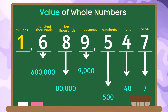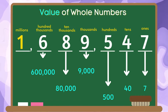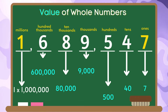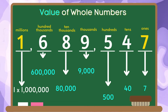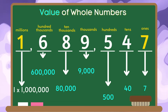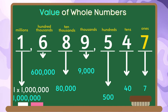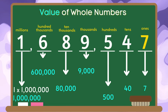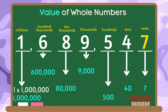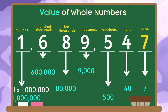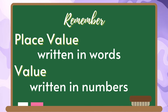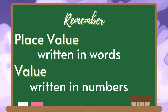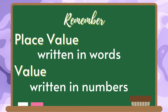Lastly, we have the digit 1. The place value of the digit 1 is millions. We are going to multiply 1 by 1,000,000 to get its value. 1 times 1,000,000 is equal to 1,000,000. Therefore, the value of 1 in this number is 1,000,000. Always remember that the place value is written in words while value is written in numbers.